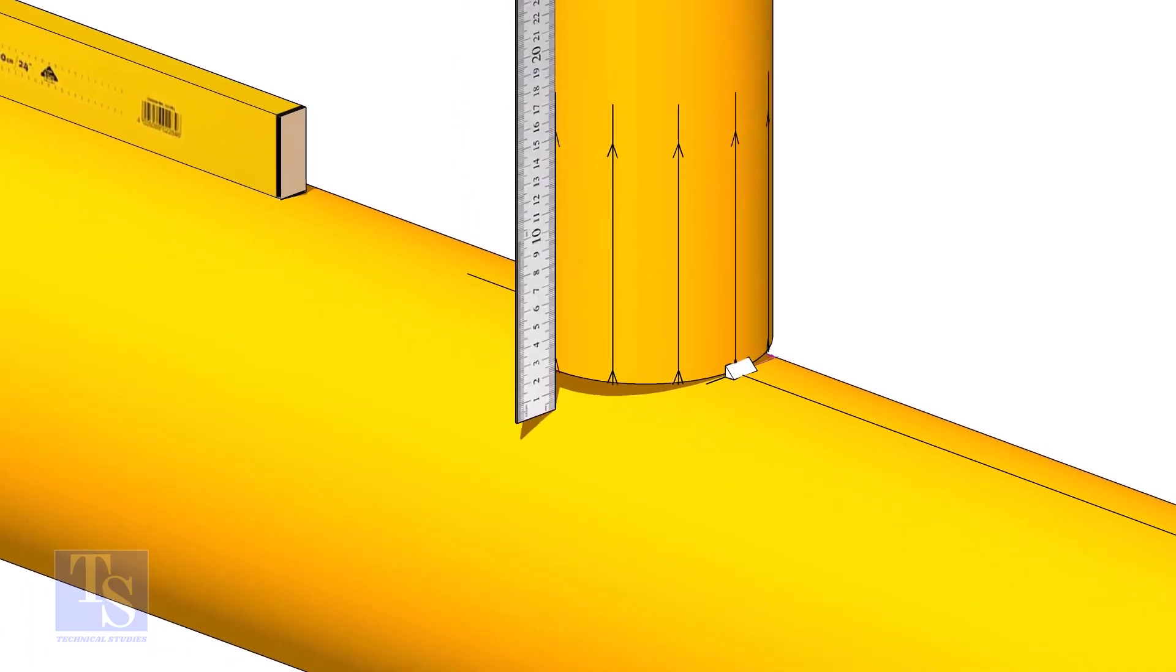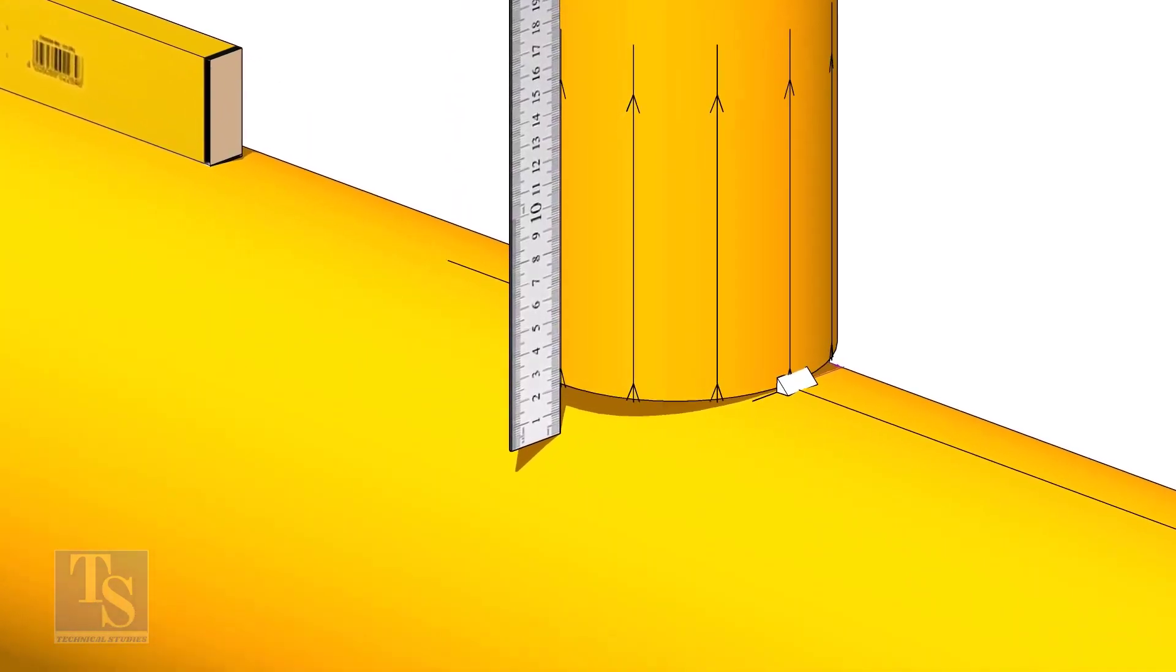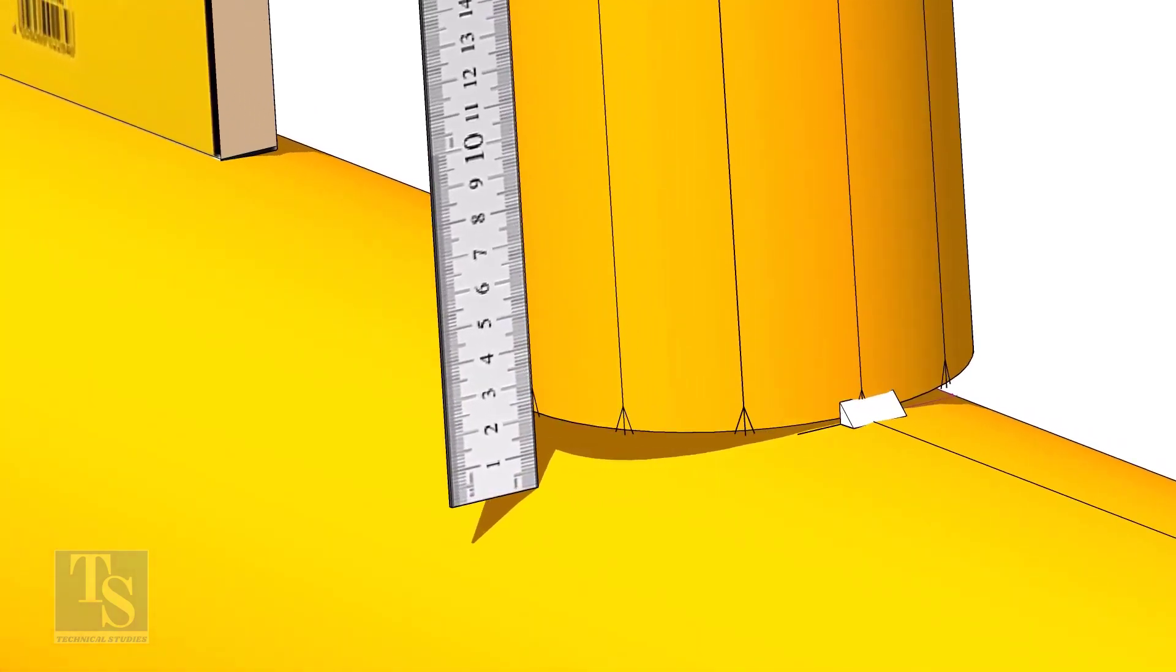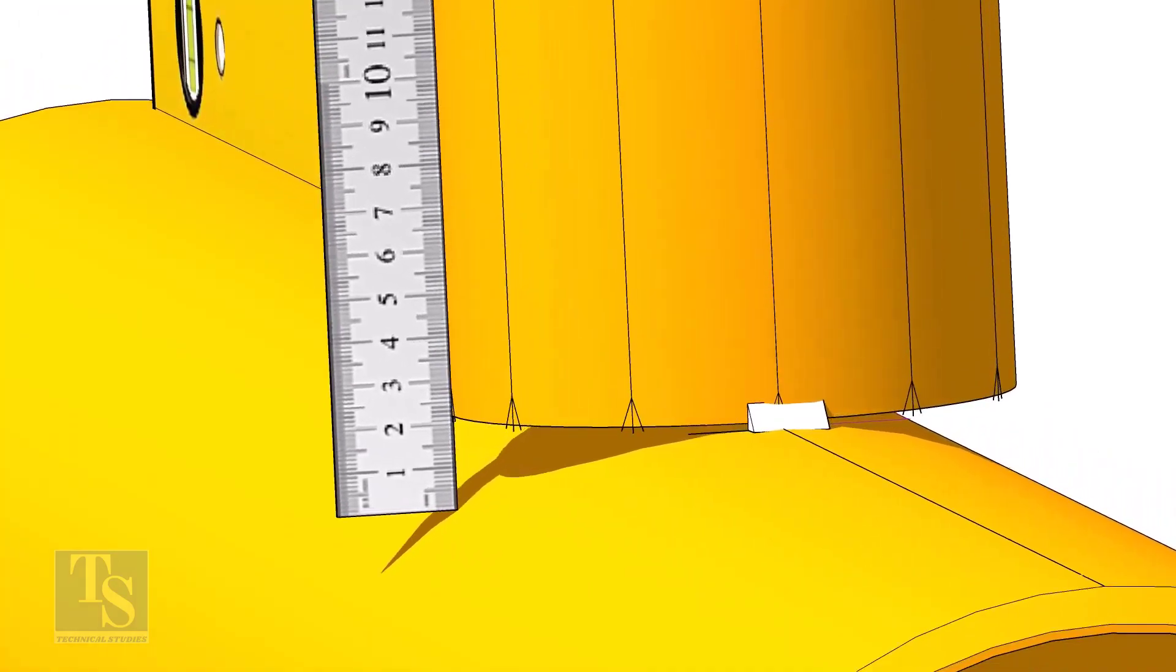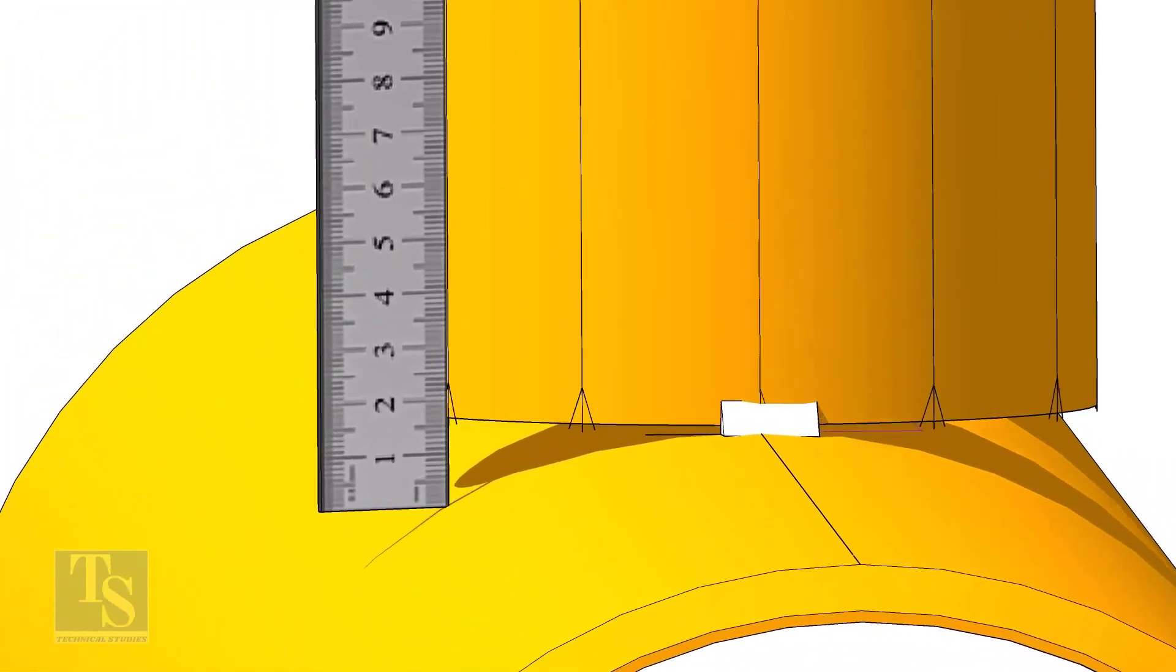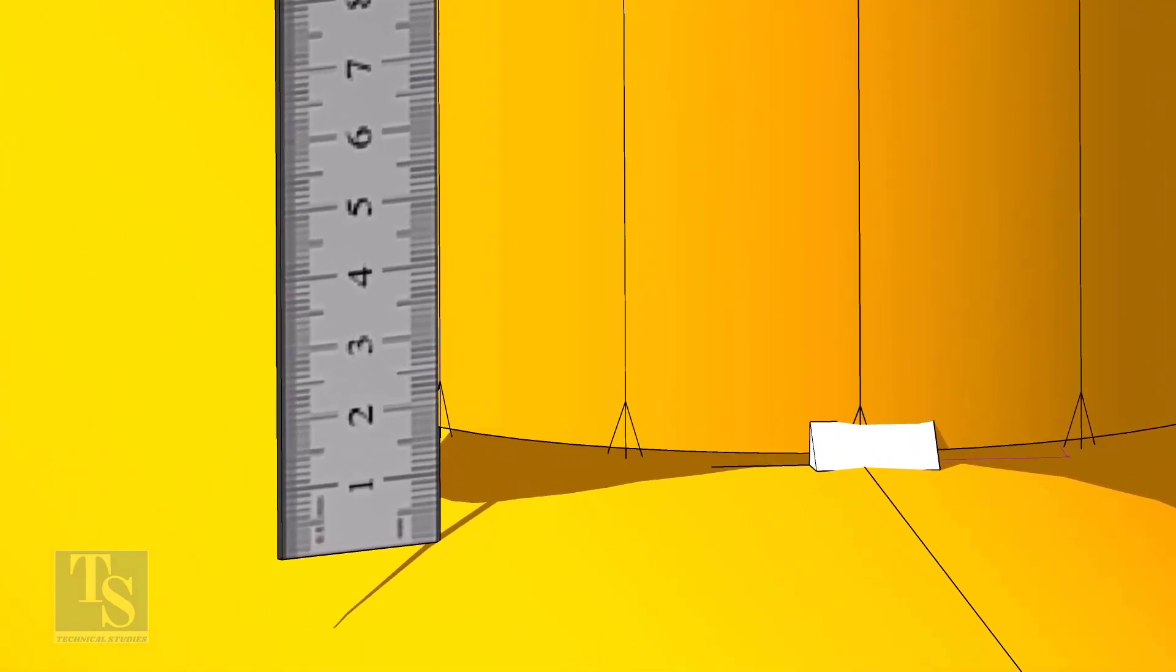Check the gap between the header and the branch as shown. When you measure, make sure the scale is vertical and is on the line on the branch pipe. Move the scale to the next vertical marking on the branch. Mark the distance on the branch from the header. In this case, it is 22 millimeters.